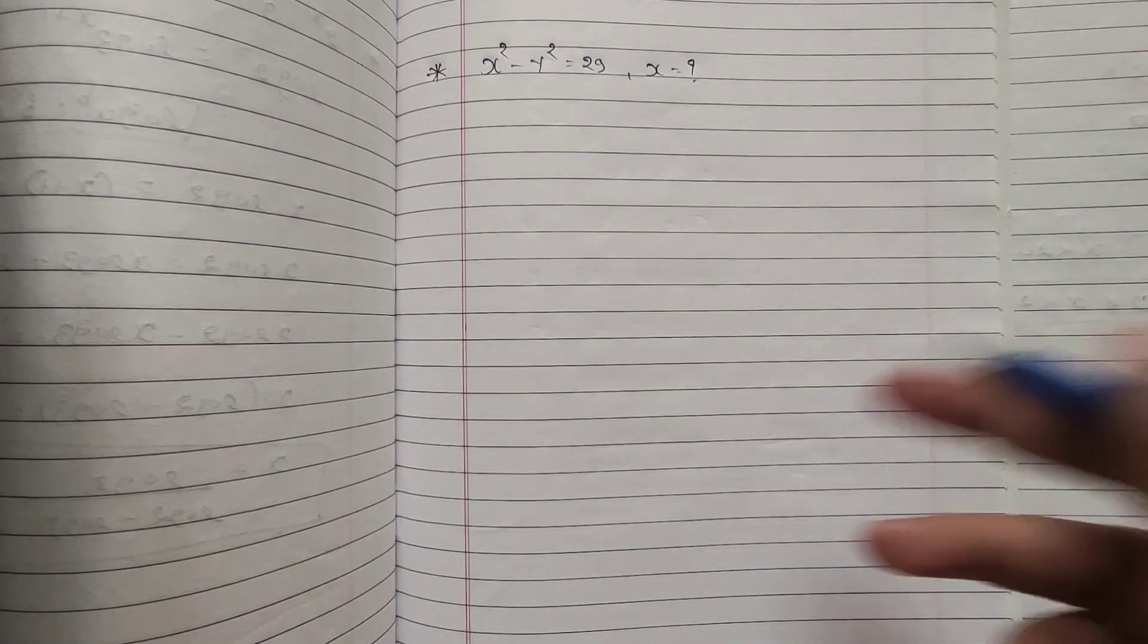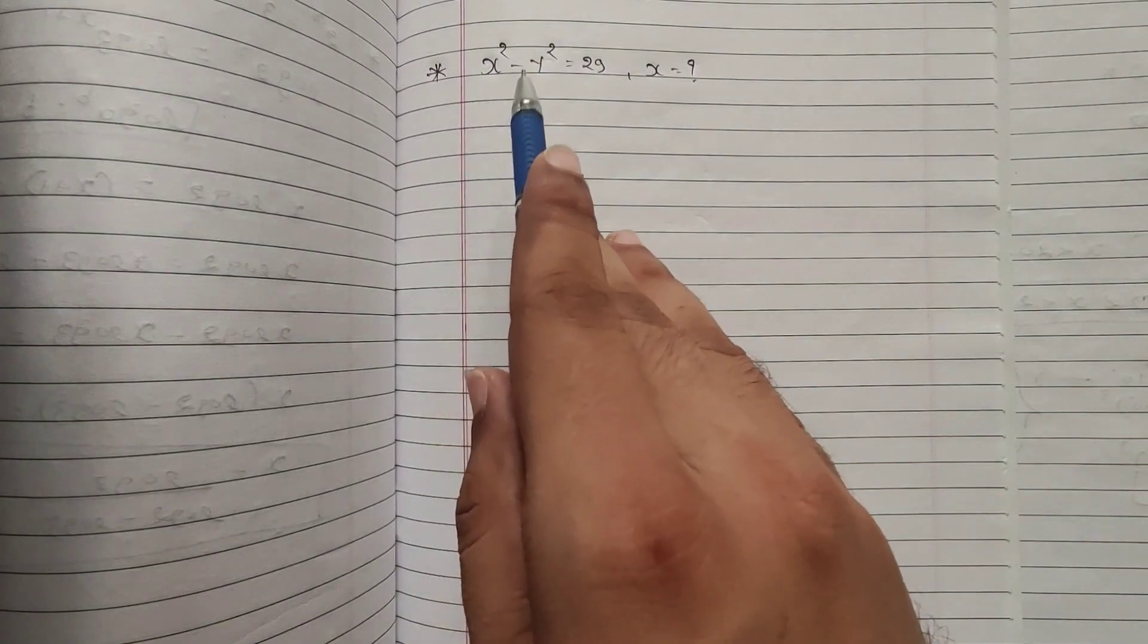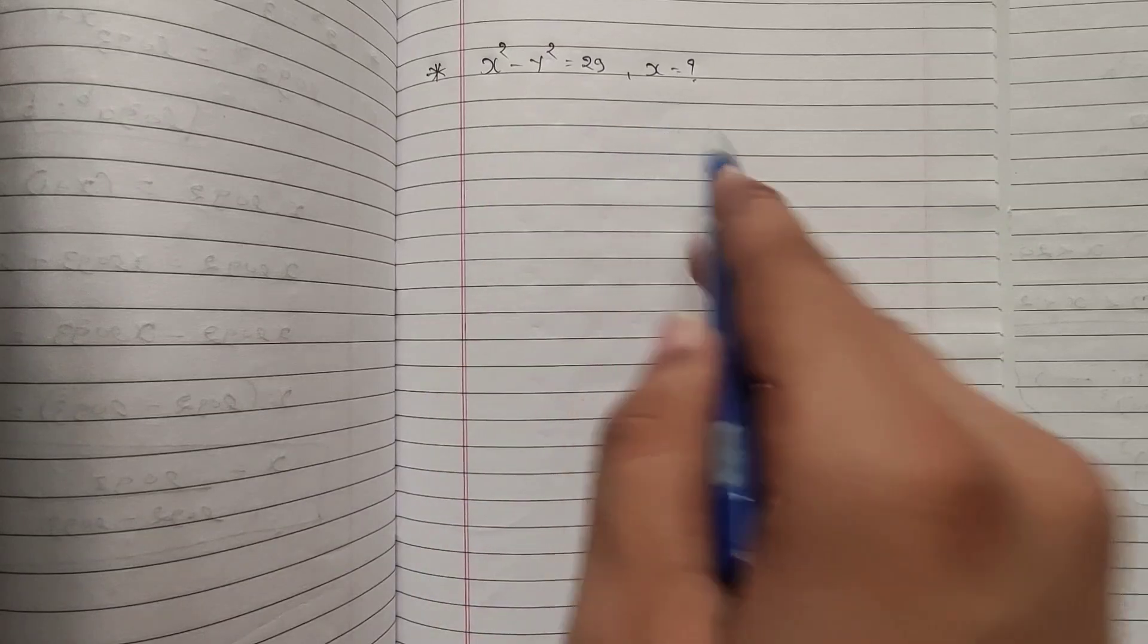So hello everyone, welcome to my channel. Here I have question x square minus y square equal to 29 and we have to find the value of x.